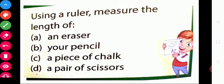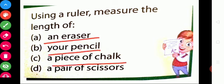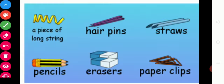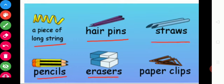Using a ruler to measure some of these objects. What are the objects given here? Eraser, pencil, piece of chalk, and a pair of scissors — these objects can be measured in centimeter. Some more examples: piece of string, hairpins, straws, pencils, erasers, and paperclips — we can use these to measure length in centimeter.